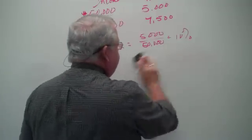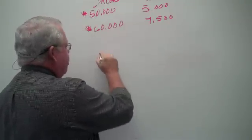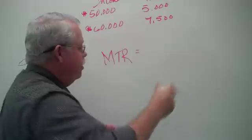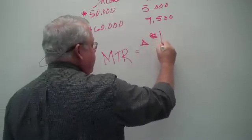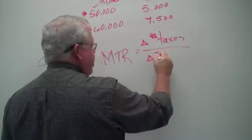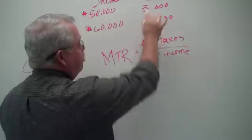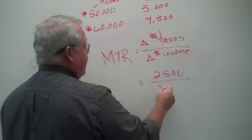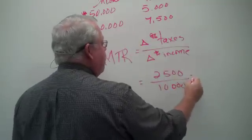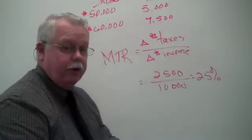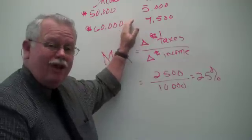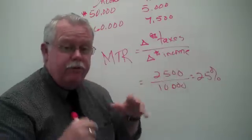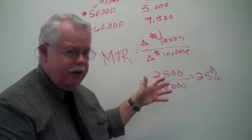But let's not just look at the average tax rate — let's look at the marginal tax rate. In other words, what amount of tax are you paying on your extra income? To do that, we take the change in taxes paid divided by the change in income. In this case, your taxes went up by $2,500 and your income went up by $10,000, so your marginal tax rate is 25%. Of the extra $10,000 you made, you paid 25% in taxes. Don't confuse the average tax rate and the marginal tax rate — they are not the same thing.